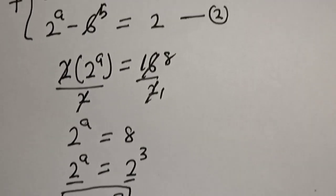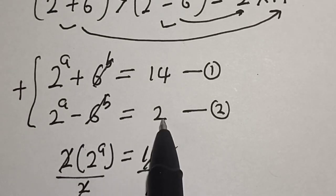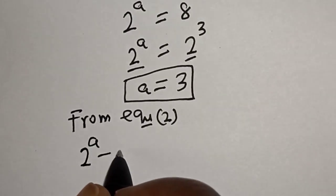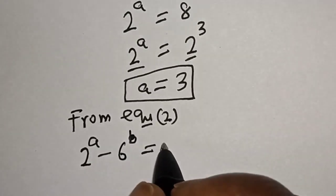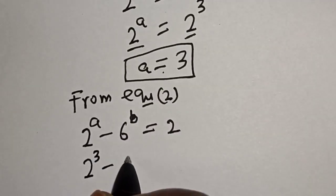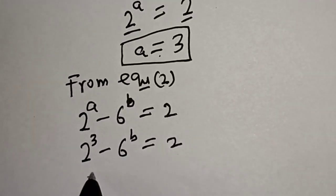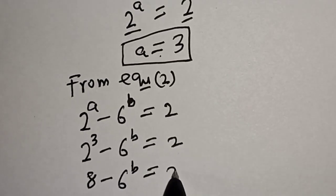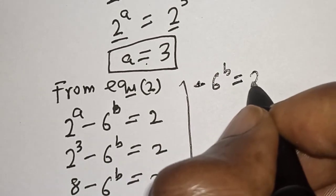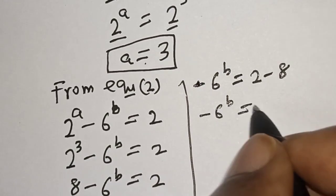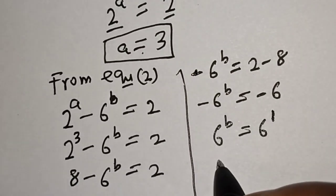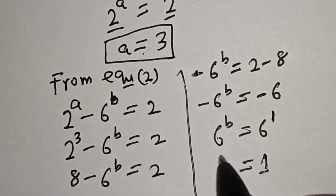Now we can solve for b using equation 2: 2 raised to power a minus 6 raised to power b equals 2. Substituting a equals 3, we get 2 raised to power 3 minus 6 raised to power b equals 2, which gives 8 minus 6 to the power of b equals 2. Therefore, 6 to the power of b equals 6, which equals 6 raised to power 1, so b equals 1.